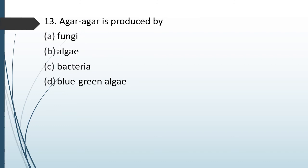Question No. 56: Agar agar is produced by: Option A — Fungus, Option B — Algae, Option C — Bacteria, Option D — Blue-green algae. The correct answer is Option B — Algae.